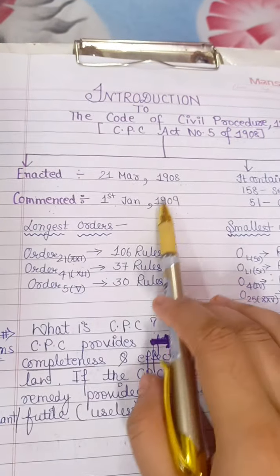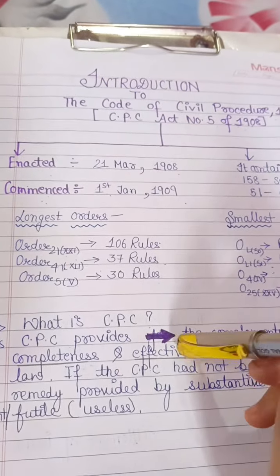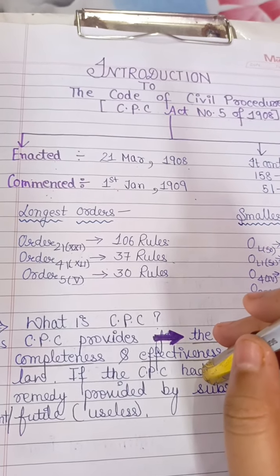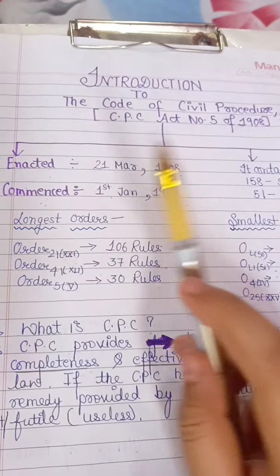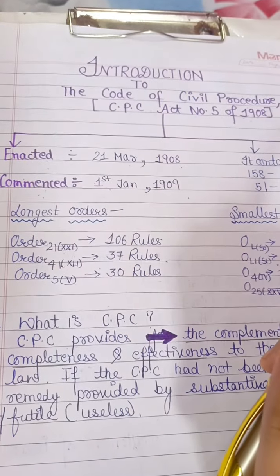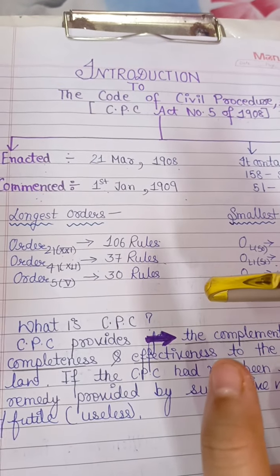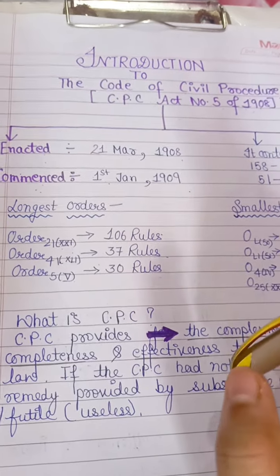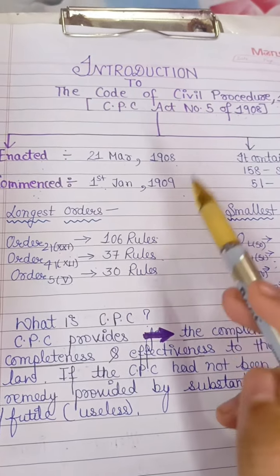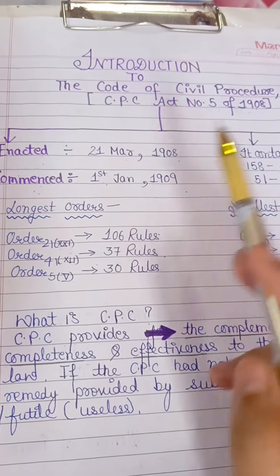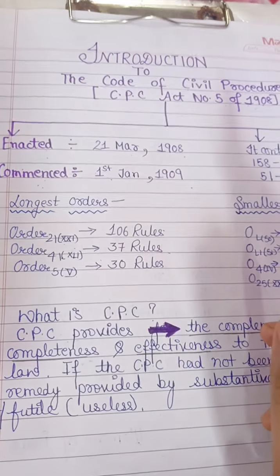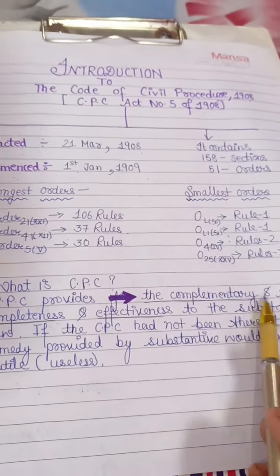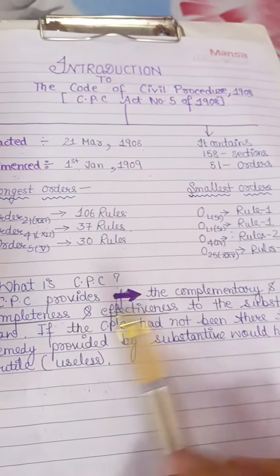Before knowing about the concept of CPC, we must understand why CPC is made and what is the intention of making CPC. We must understand the difference between Procedural and Substantive Law. Procedural Law tells us the procedure of how a remedy can be enforced, whereas Substantive Law tells us the remedy itself. CPC provides complementary completeness and effectiveness to Substantive Law.